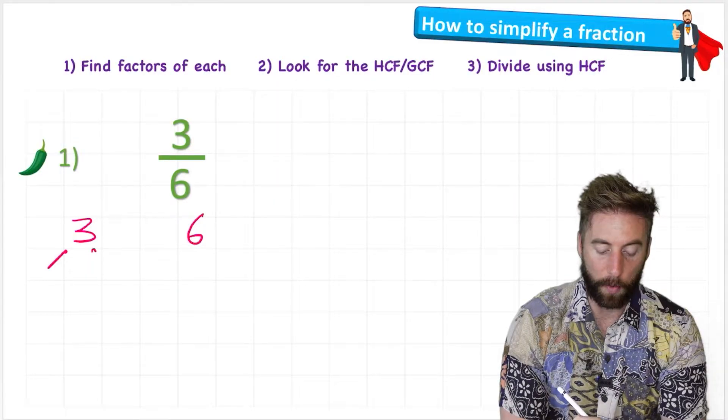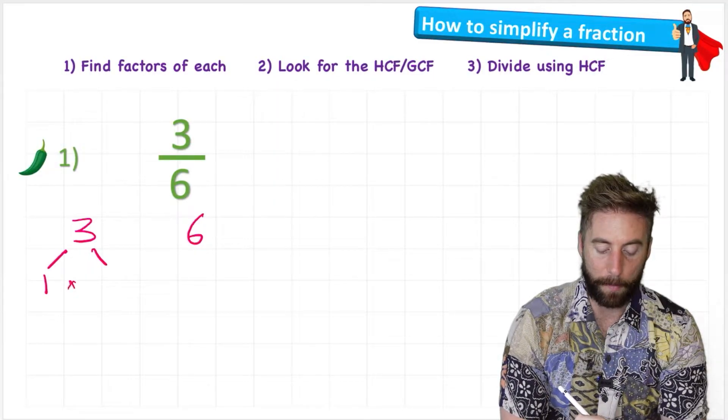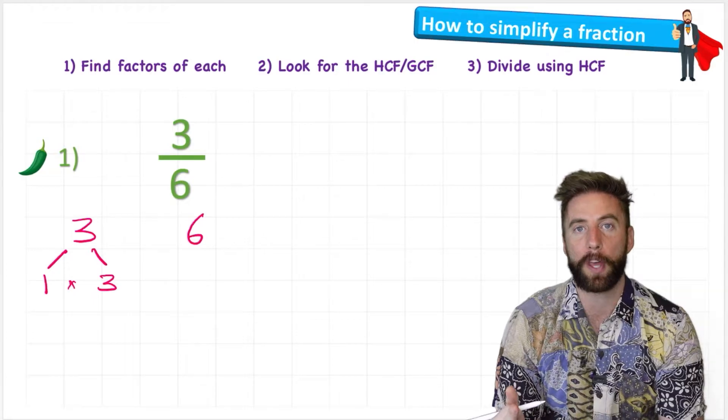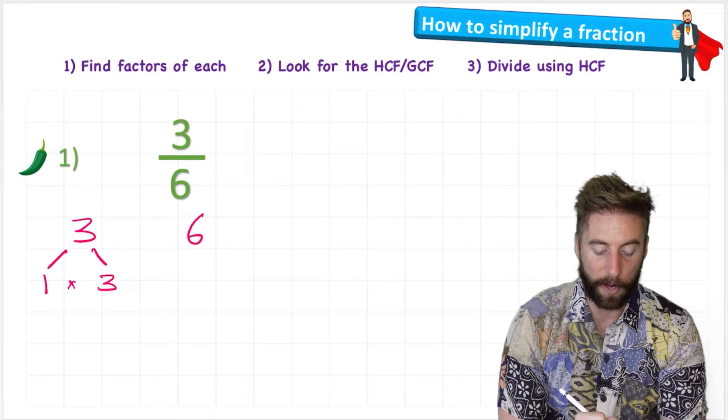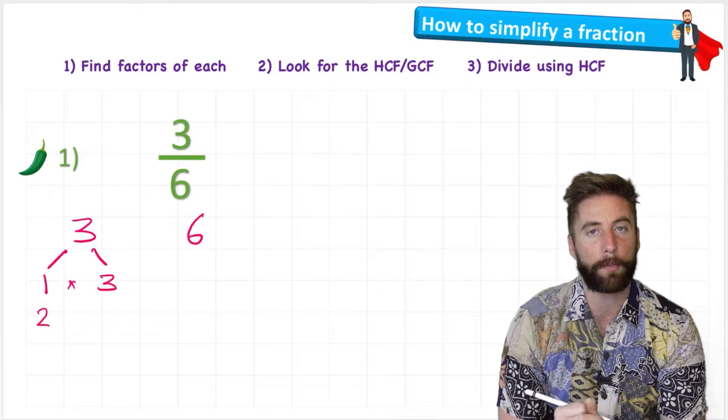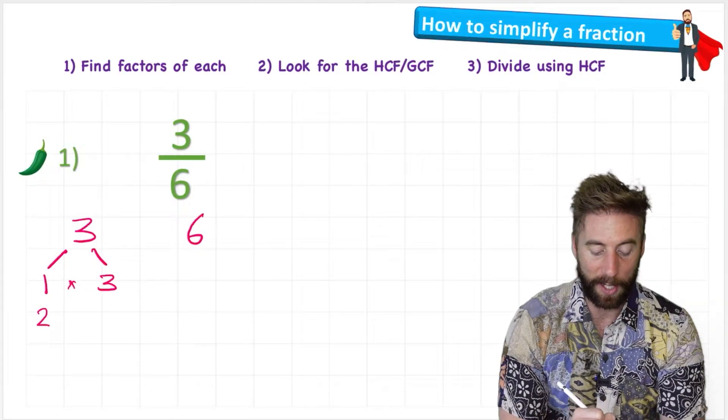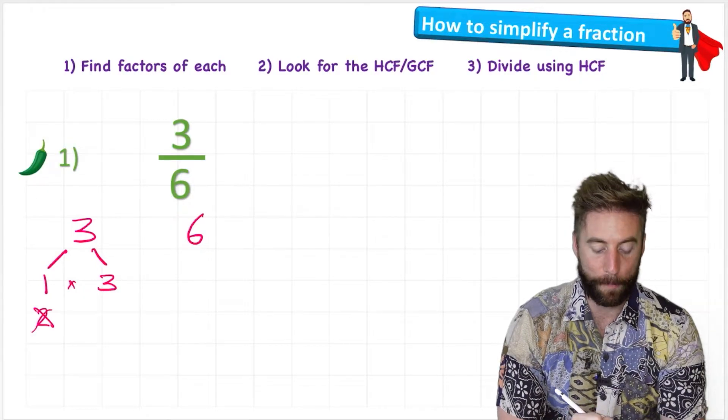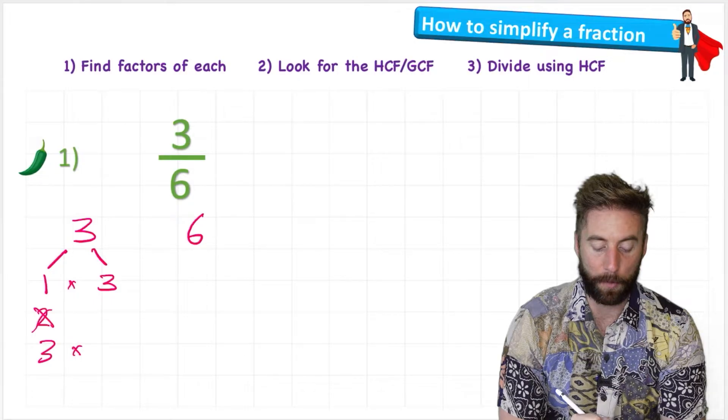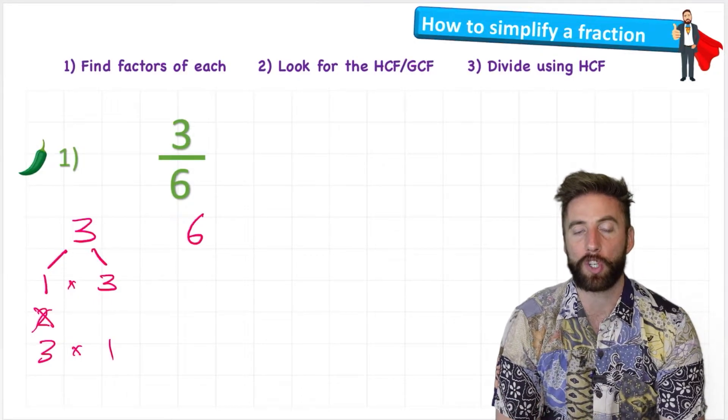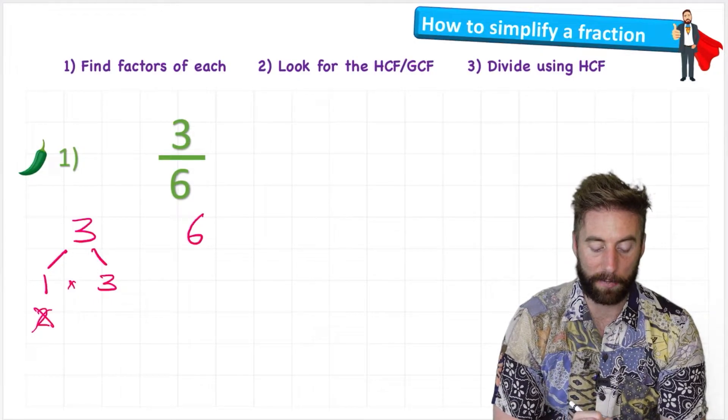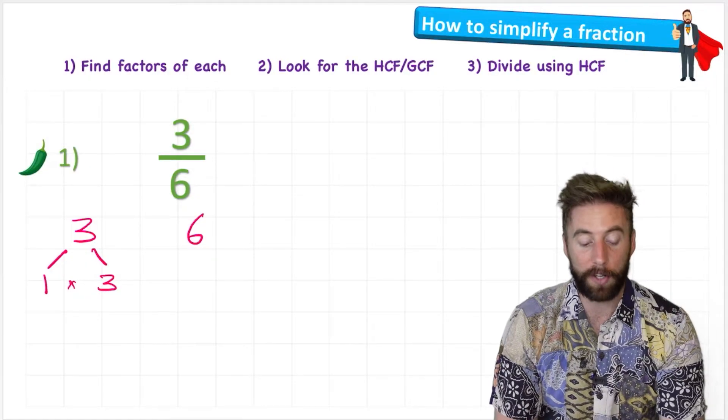We always with a factor tree start with one multiplied by the number itself because we know they're going to be factors. And then I'm going to look for any more. Does two work? Can I multiply two by anything to get three? No I can't. And I'm back to three which will be then multiplied by one, so I don't need to show that because that's using the same factors. So the only factors of three are one and three.